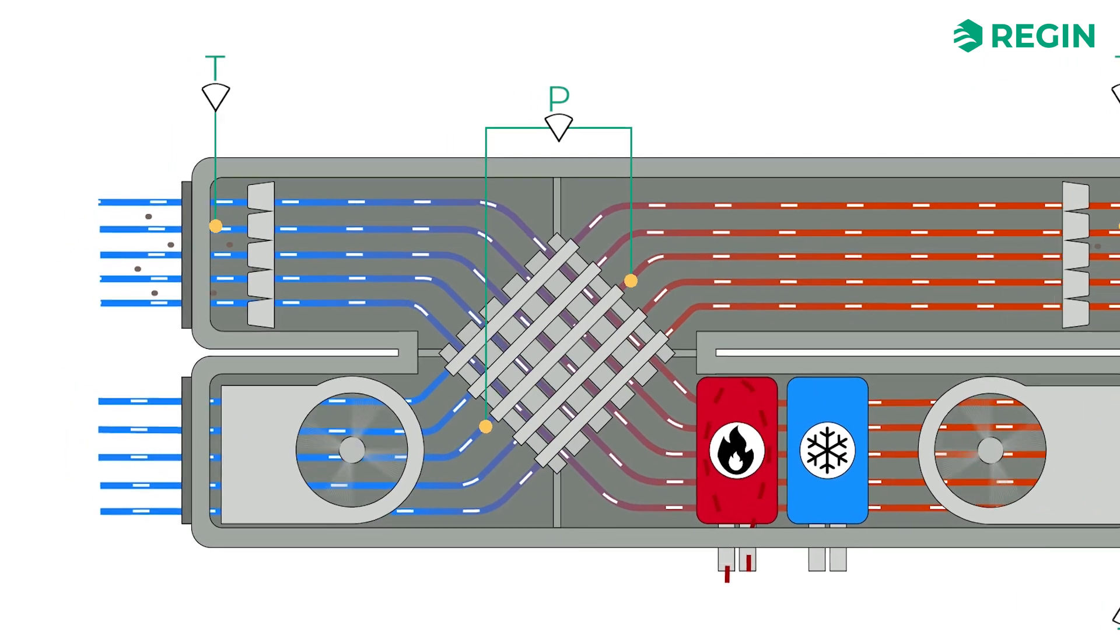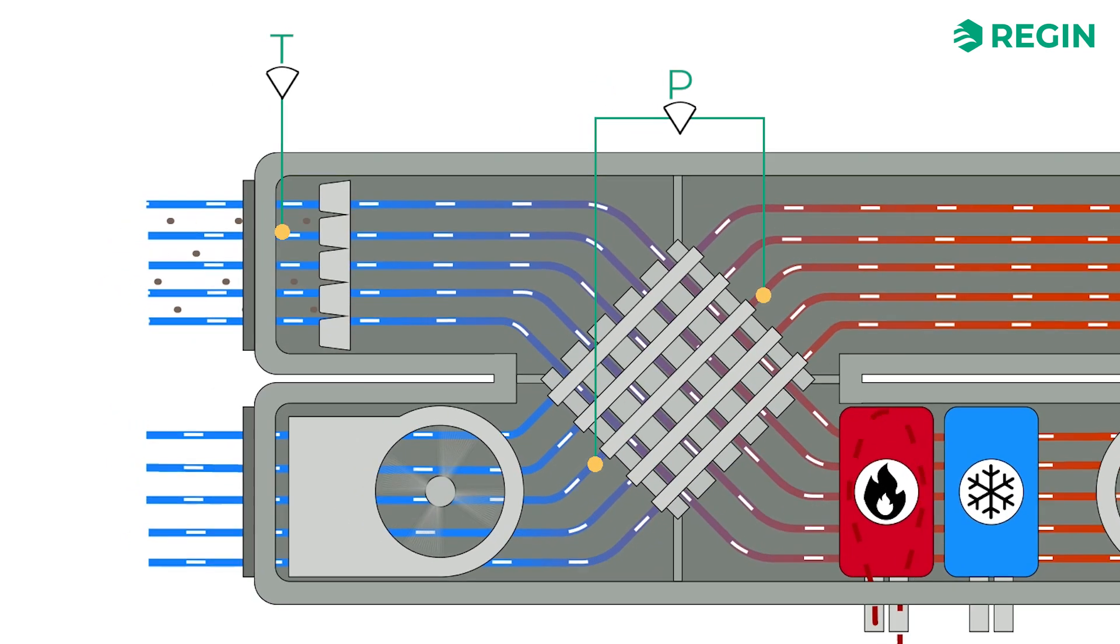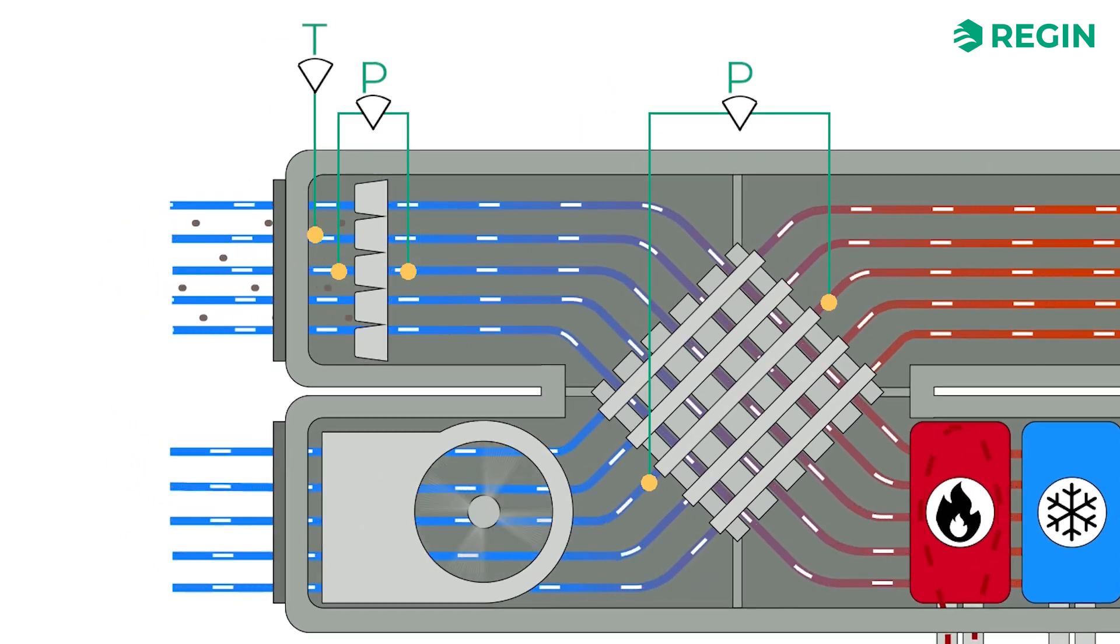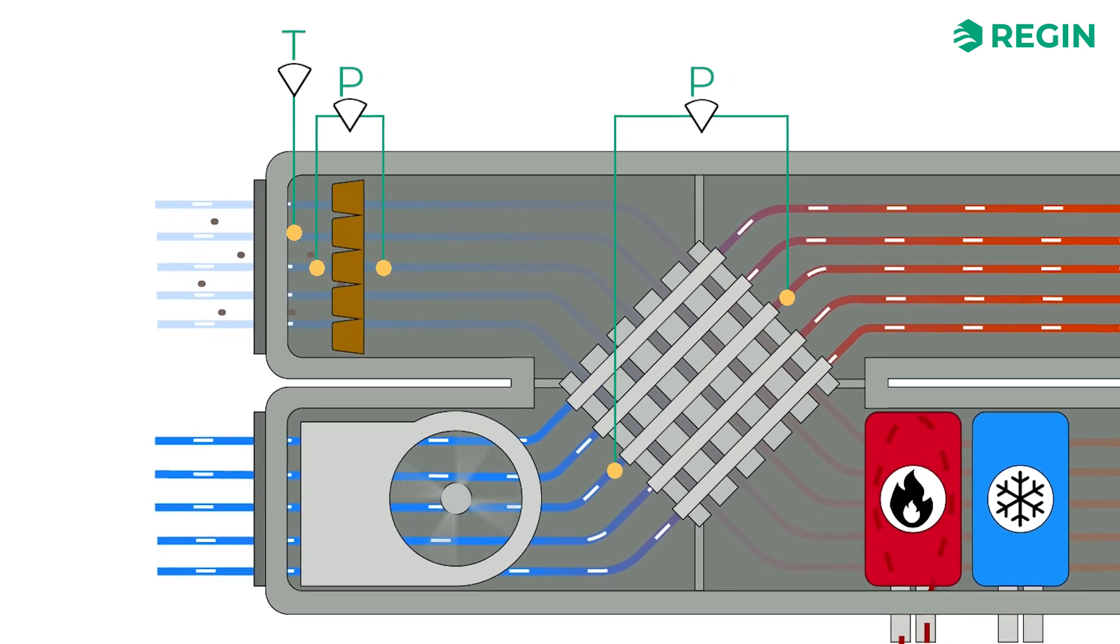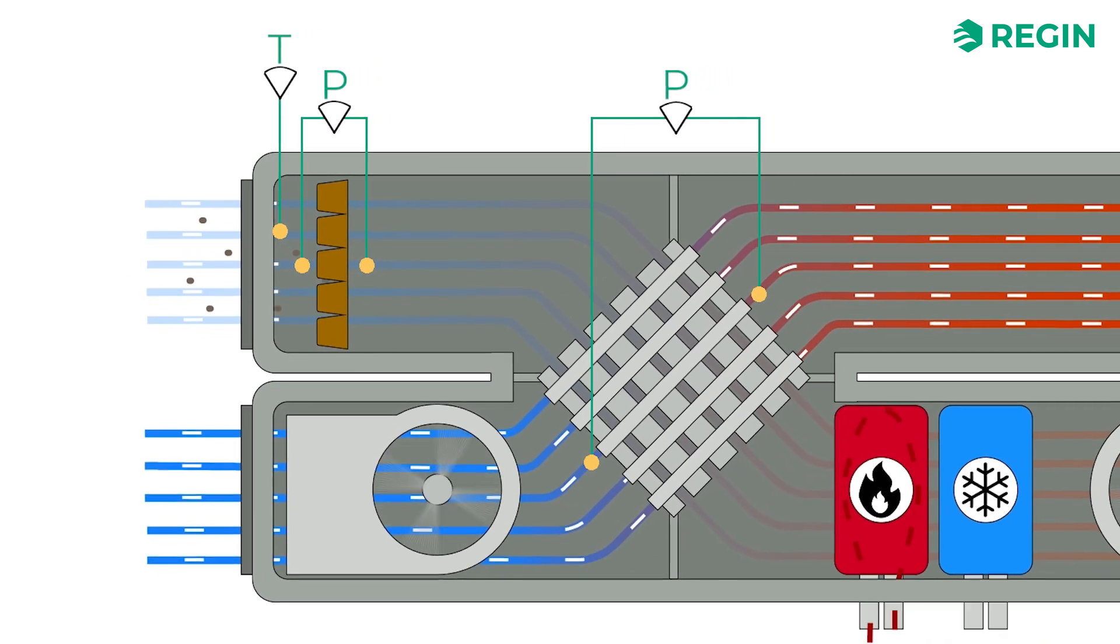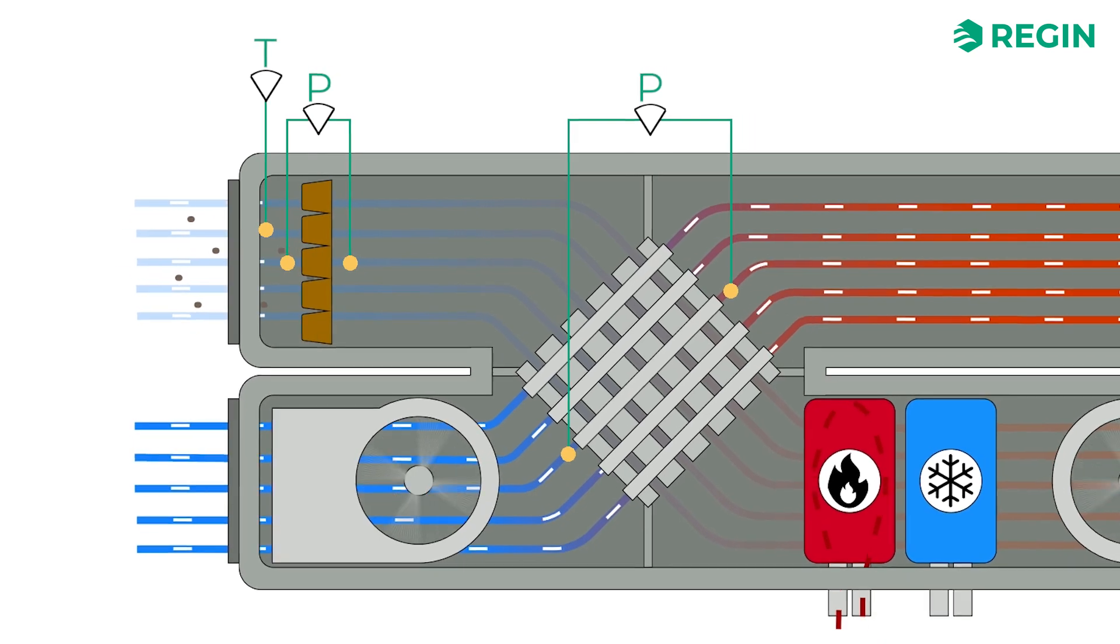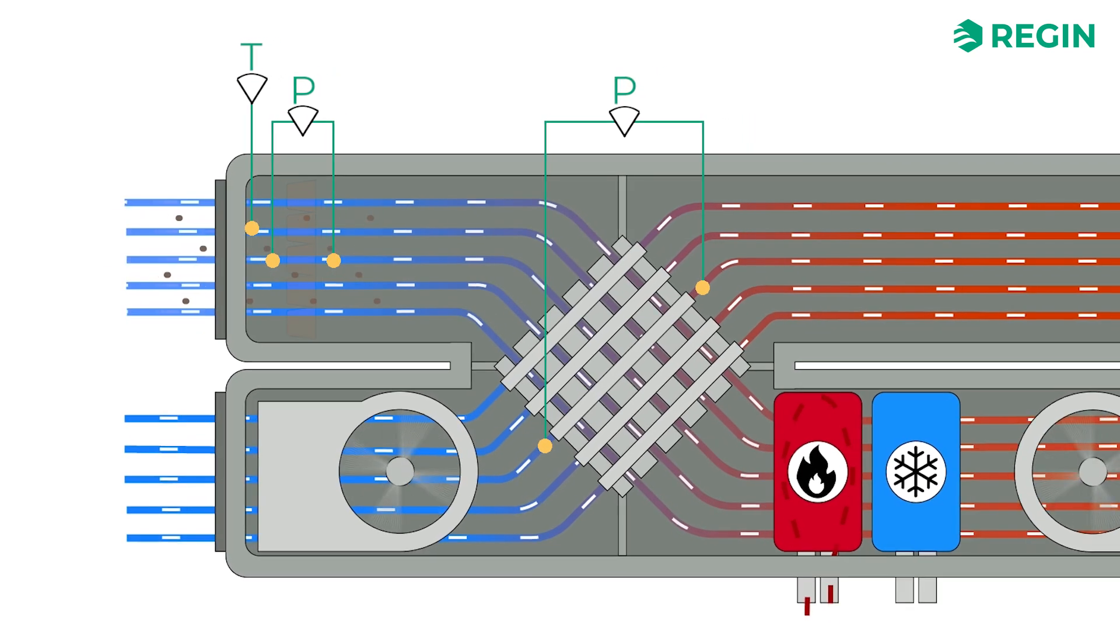Pressure difference is also measured to keep an eye on the status of the particle filters. Over time, accumulated particles will clog up the filters, which makes it more difficult for the air to pass through. In such a situation, the fans will need to work harder to move air in and out, but that requires more energy. So by keeping an eye on the pressure difference over the filters, it will be clear when a filter needs to be exchanged.